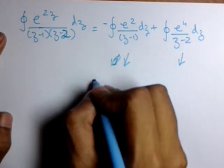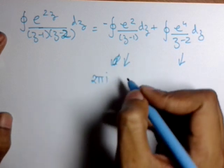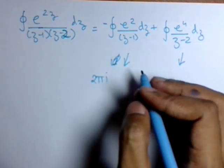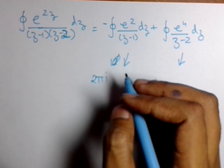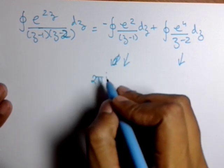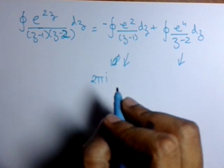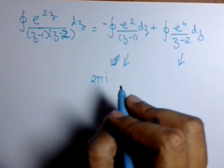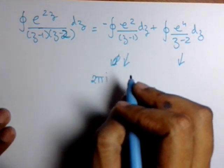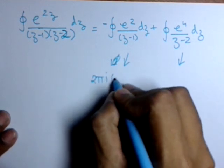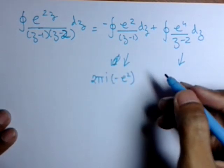Now we can have these as individual questions. The solution to this is 2πi into f(z0). Now here we can see that f(z) is e squared, so there is no value of z that can be put.